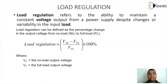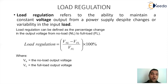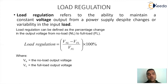By definition, load regulation is defined as: (V_no-load − V_full-load) / V_full-load × 100, where V_no-load is the voltage measured at the output when the load is disconnected, and V_full-load is the voltage measured across the output when the load is connected. The difference between no-load and full-load values is essentially an error value. Load regulation is the variation in output voltage with respect to the full-load value, expressed as a percentage.